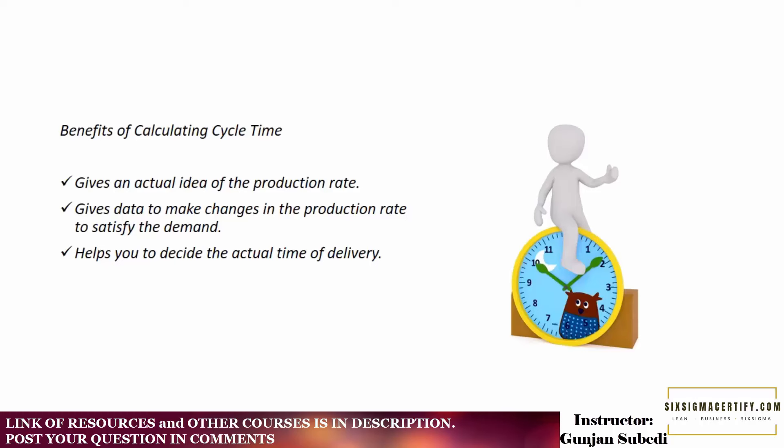Now let us see some of the benefits of calculating cycle time. It gives you an actual idea of the production rate. So of course cycle time is the production rate. It gives data to make changes in the production rate to satisfy the demand. So for that, we already learned that we have to compare takt time with the cycle time and if the cycle time is greater than the takt time, we must do something in the manufacturing process itself so that we can reduce the cycle time. So it gives us the data to make changes in the production rate. And last, it tells you to decide the actual time of delivery. So when you ultimately know what is the rate at which you are able to produce, you can also forecast by when you will be able to deliver the product or the services to the customers.